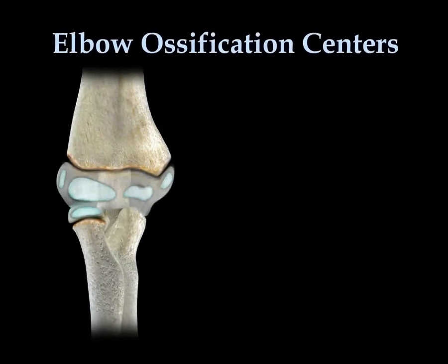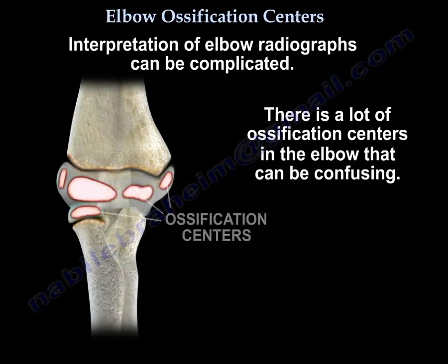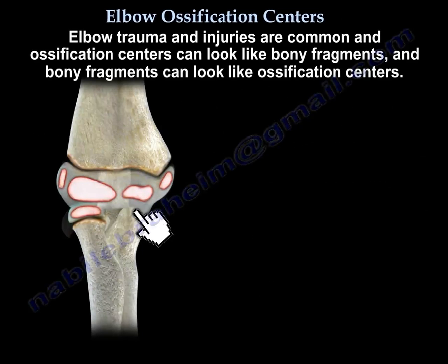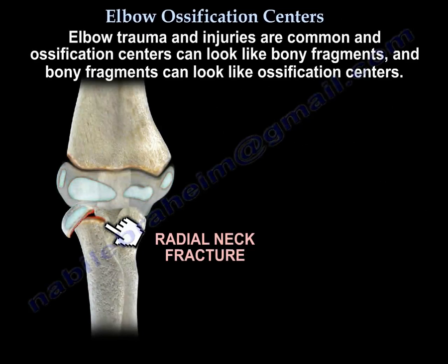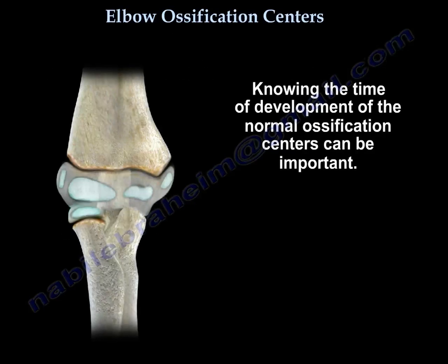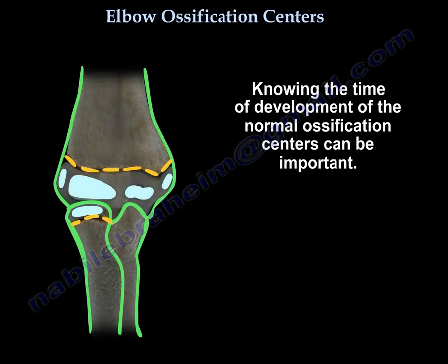Elbow Ossification Centers. Interpretation of elbow radiographs can be complicated. There are a lot of ossification centers that can be confusing. Elbow trauma and injuries are common, and the ossification centers can look like bony fragments, and bony fragments can look like ossification centers. Knowing the time of development of the normal ossification centers can be important.